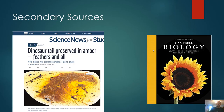Secondary sources are sources where someone reads the author's paper and then talks about it. So your textbook might be a secondary source, or Science News for Students — a great website if you're into science. For example, an article titled 'Dinosaur tail preserved in amber, feathers and all' — that's not the original research; that's a secondary source, not peer-reviewed. It's just what some article writer has to say about the science. So secondary sources we typically don't use in our own writings as a citation. We try as much as possible to cite primary sources.